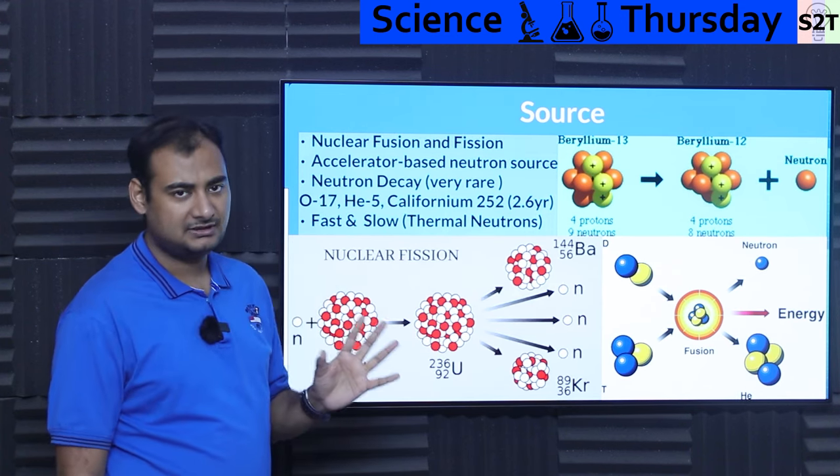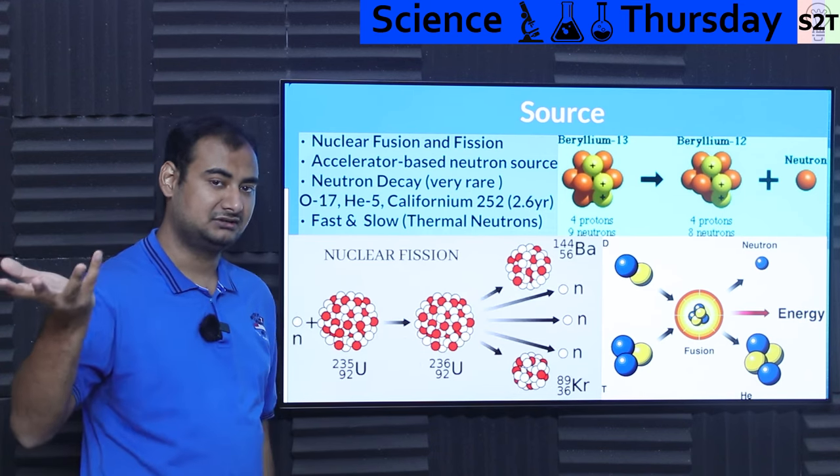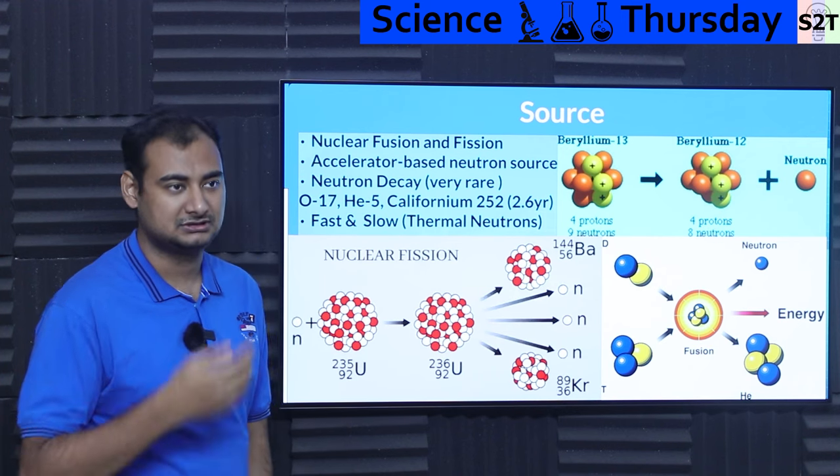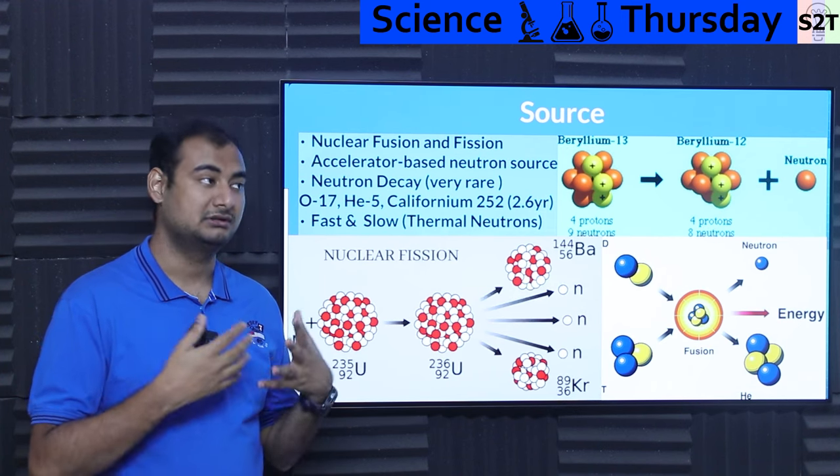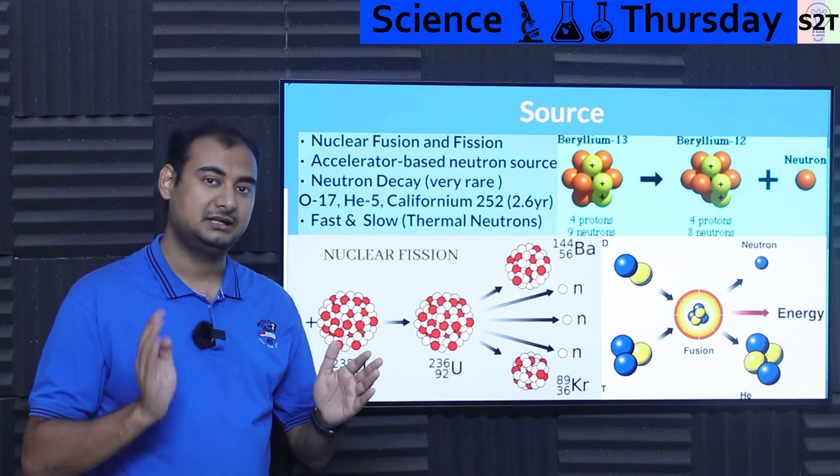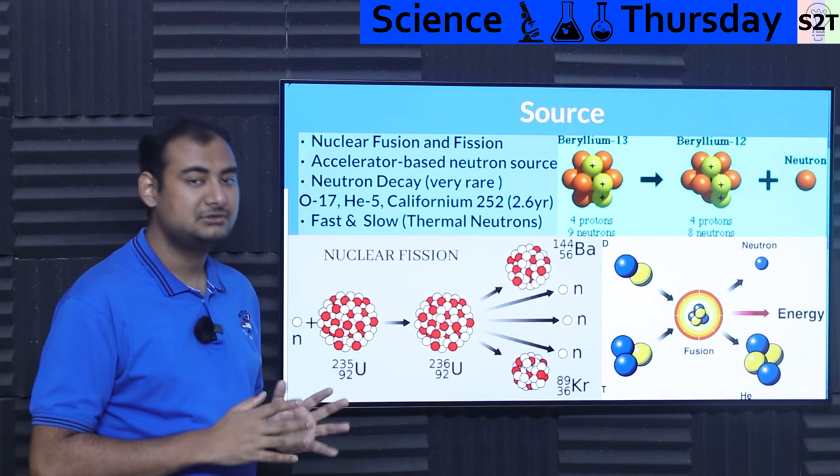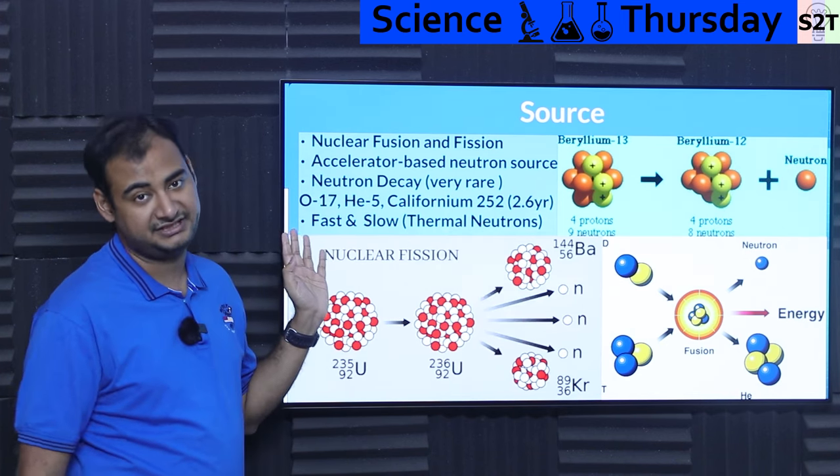However the most rare part is neutron decay. Meaning you have stuff. That stuff is giving neutron. That's very rare. That's why most of the time whenever you are talking about nuclear waste or stuff, most of the time you are talking about alpha, beta and gamma. You are generally not talking about neutron decay. While it does happen but it's very rare.